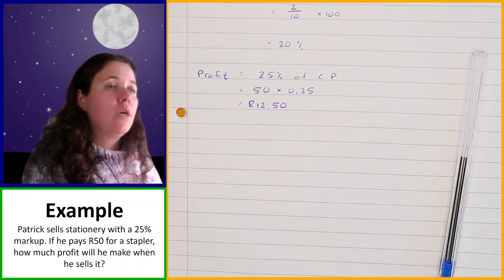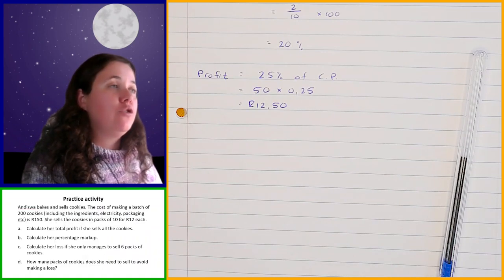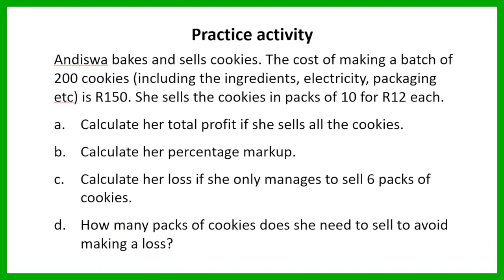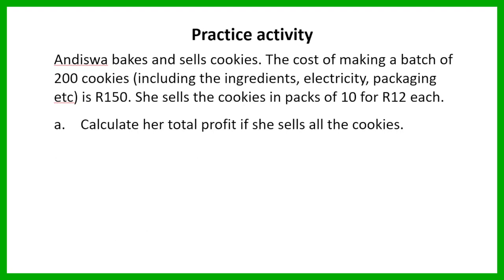So now we're going to go through one that you're going to do for yourselves. In this example, we've got Andiswa, who bakes and sells cookies. The cost of making a batch of 200 cookies, including the ingredients, electricity, packaging, etc., is 150 Rand. She sells the cookies in packs of 10 for 12 Rand each. The first thing you're going to do is calculate her total profit if she managed to sell all of her cookies. I'm going to give you one minute to work on that.